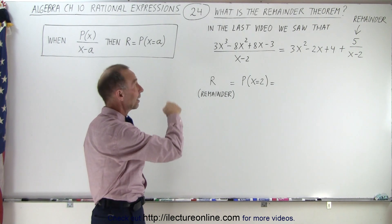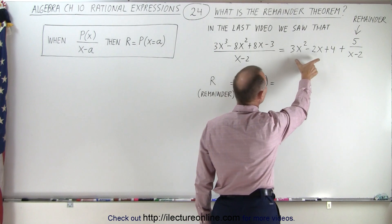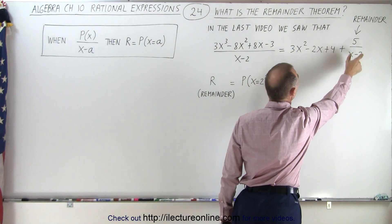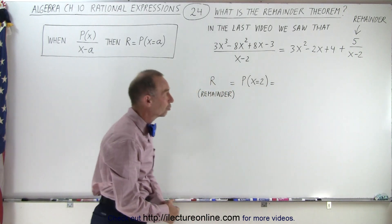That's the one we did in the last video. We saw that the result of that would be 3x squared minus 2x plus 4 plus the remainder of 5 over the divisor x minus 2.